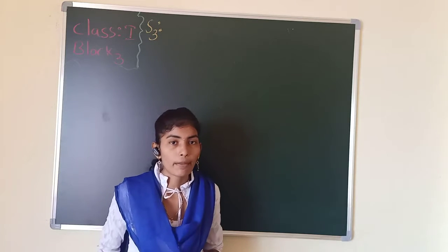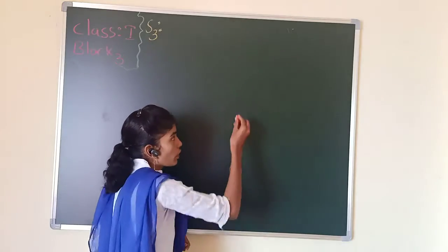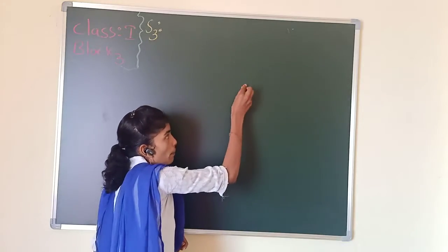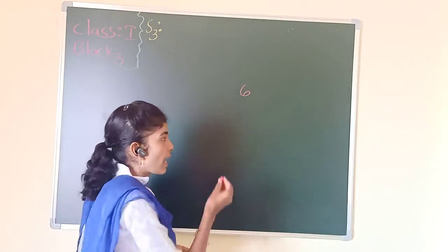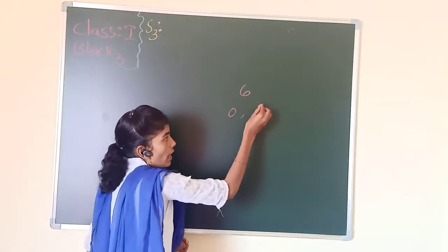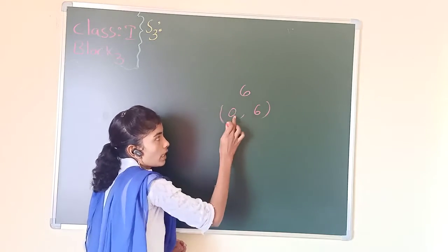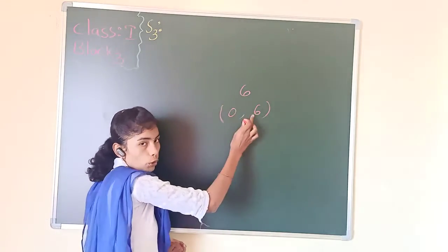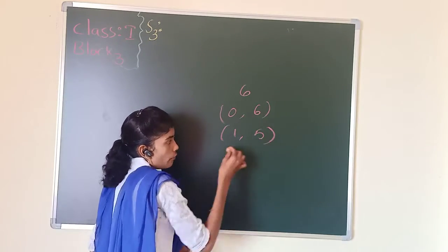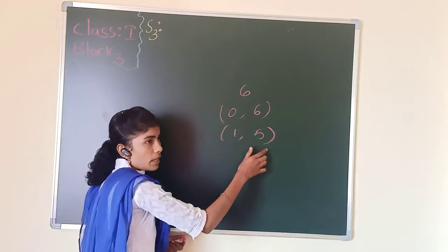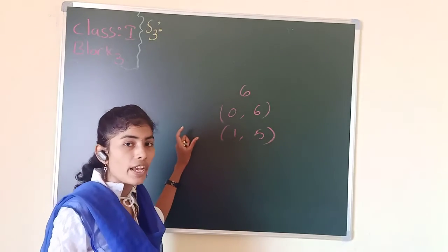So how did we make number pairs in previous classes? We split the number into two parts. For example, if we want to write number pairs for 6, we started with 0 and 6, then 1 and 5 — like this we split the numbers to make different number pairs.